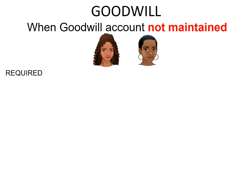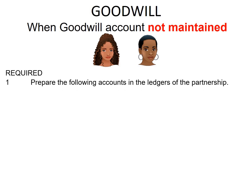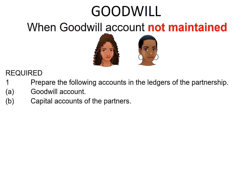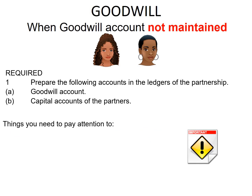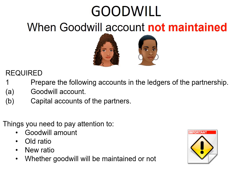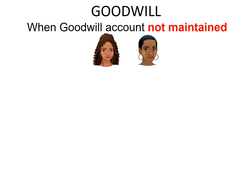What's required is to prepare the following accounts in the ledgers of the partnership: the Goodwill account and the capital accounts of the partners. Now there are some things that you need to pay attention to. They are the Goodwill amount, the old ratio, the new ratio, and whether Goodwill will be maintained or not. Let's have a look at the information again and compare it to the things that we need to pay attention to.